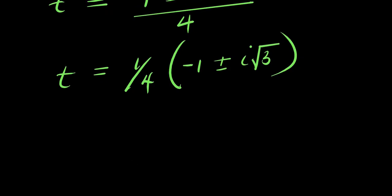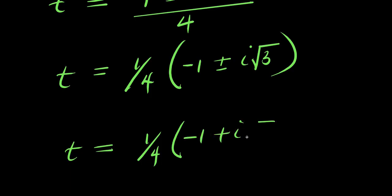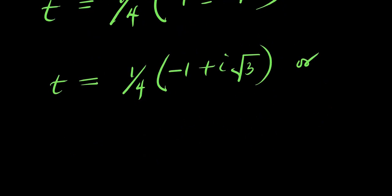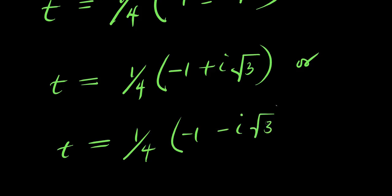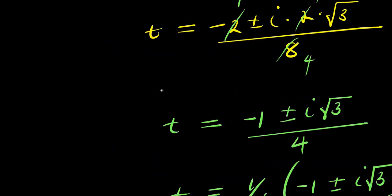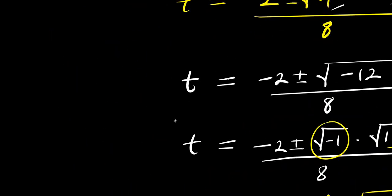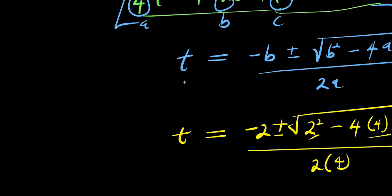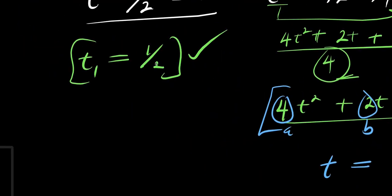Now we have two complex solutions for t: t₂ equals 1 over 4 times negative 1 plus i root 3, and t₃ equals 1 over 4 times negative 1 minus i root 3. We still have our real solution, which is t₁ equals 1 over 2.